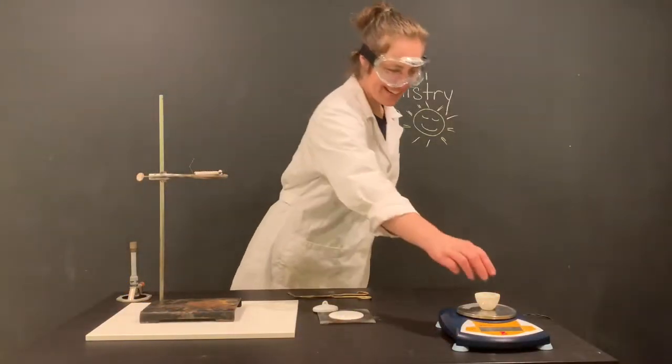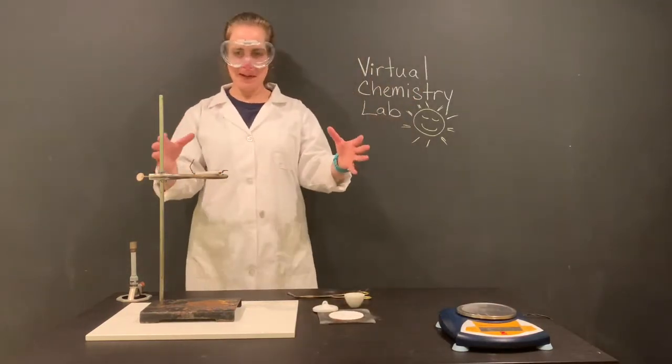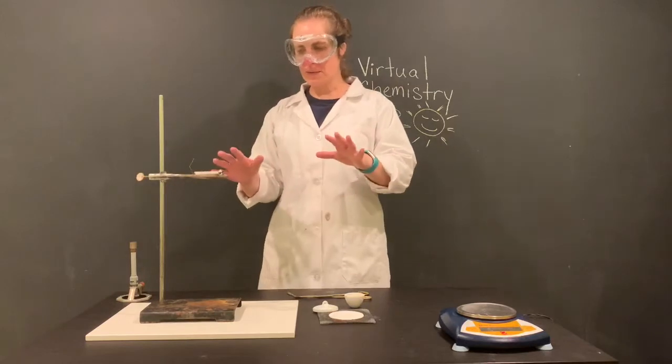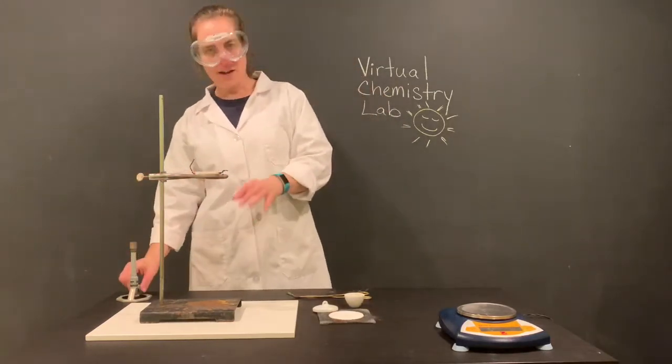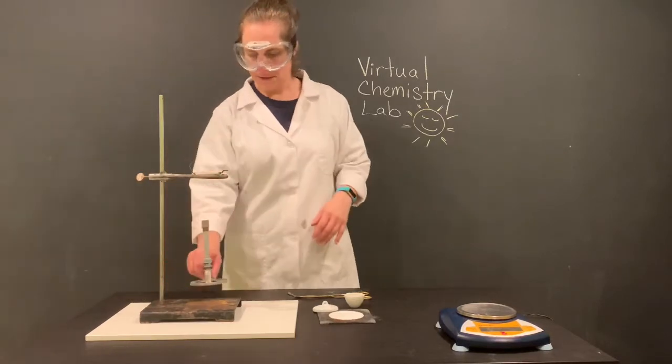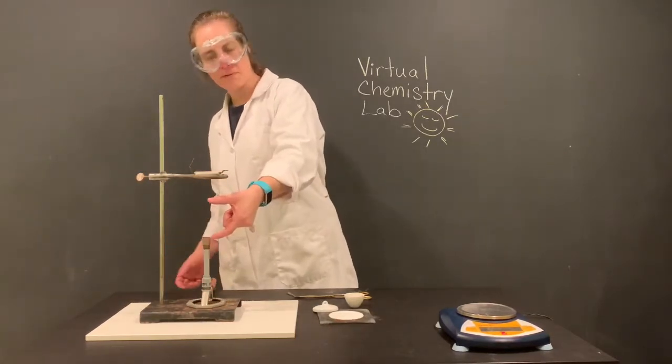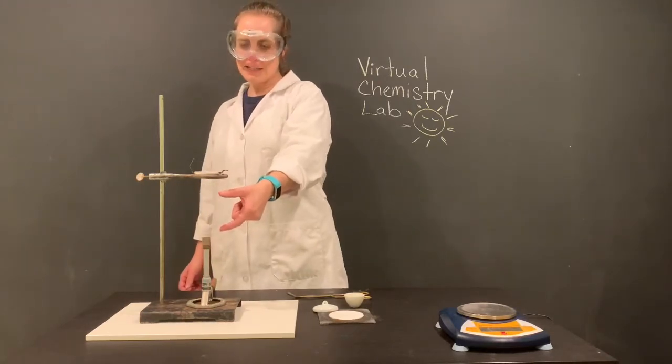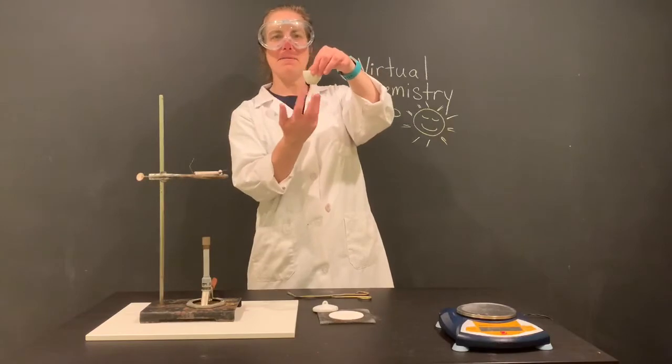Now we're going to go ahead and start our setup here. So the first thing we want to do is we want to make sure that our ring is going to be not too high away from our Bunsen burner. So we're going to want a decent-sized flame, probably about a few inches there, but we don't want it to be so high.